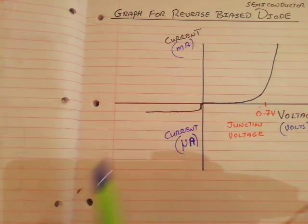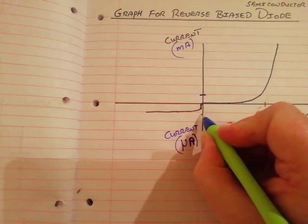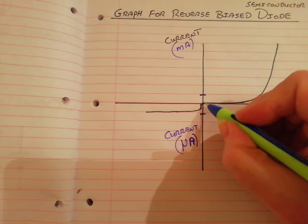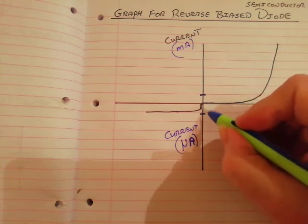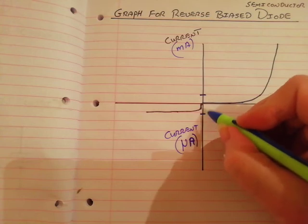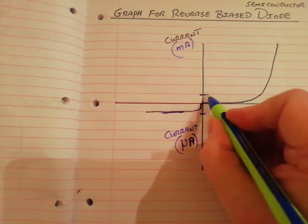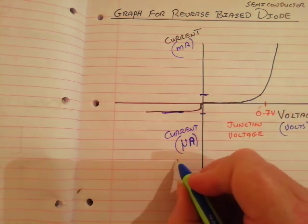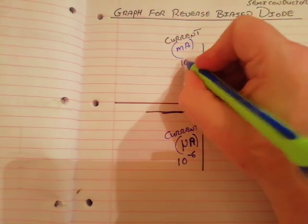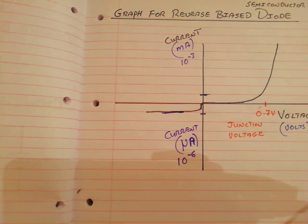Remember: one unit on the forward side and one unit on the reverse side are not the same. That's milliamps above and microamps below. This axis the current would be a thousand times smaller — microamps are 10 to the minus 6, milliamps are only 10 to the minus 3, so that current is a thousand times smaller than the current on the forward side.